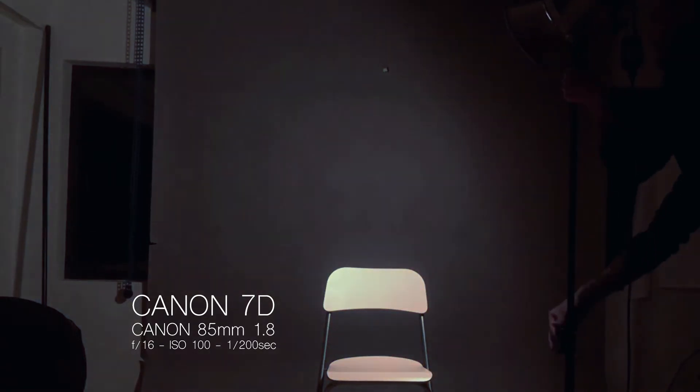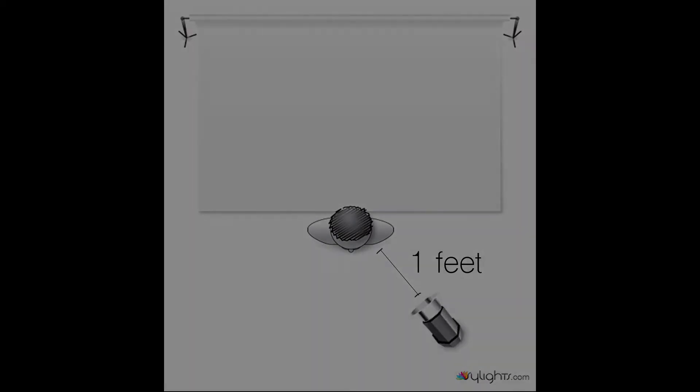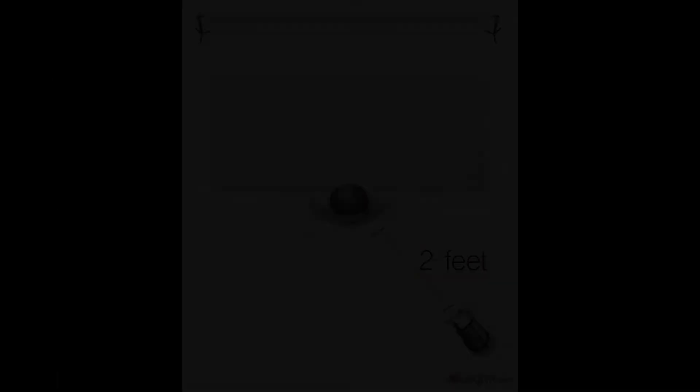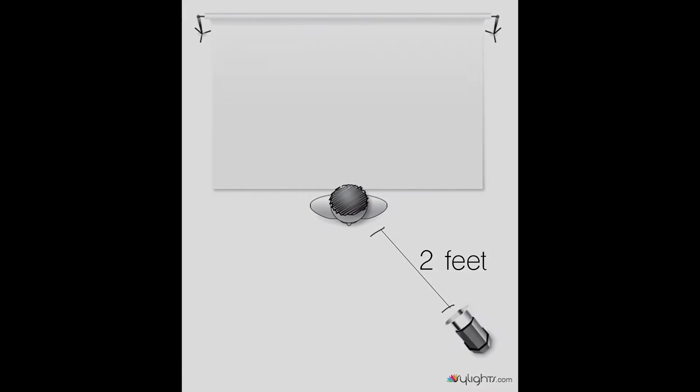I'm going to set my camera — Canon 7D with my 85 millimeter lens — at f/16, ISO 100, and 1/200th of a second. After the first image has been taken, I'm going to move the source twice its distance, which means it will be two feet away — same power, but different camera settings. In this case we will go from f/16 to f/8 to compensate for all the loss of intensity.